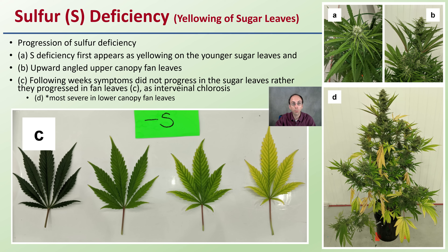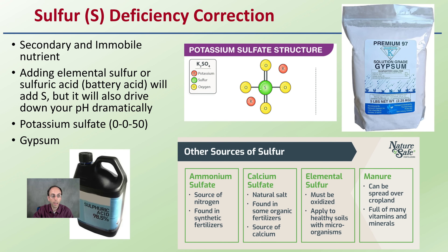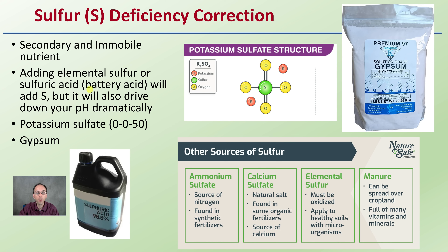To correct a sulfur deficiency — it is a secondary immobile nutrient. Adding elemental sulfur or sulfuric acid will add sulfur but also dramatically lower your pH, so these are not recommended. Potassium sulfate — if you also need potassium — contains some sulfur. You can also add gypsum, which will not alter your pH. Other sulfur sources may also provide benefits of additional nutrients such as calcium or nitrogen, so take those into consideration.